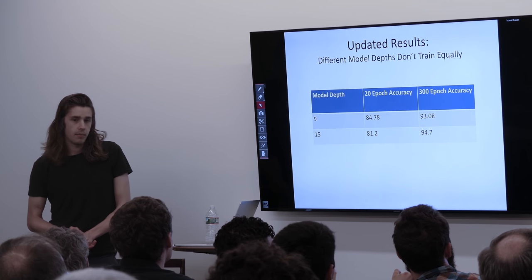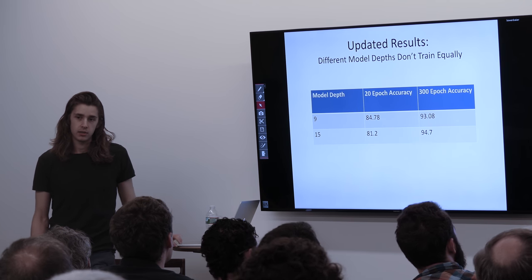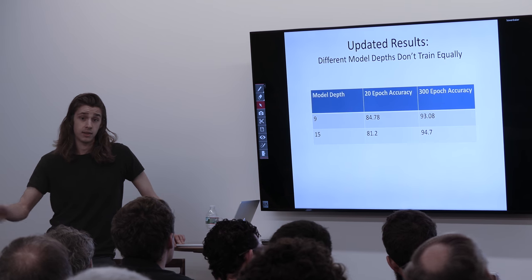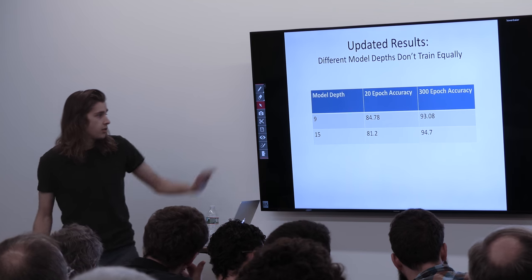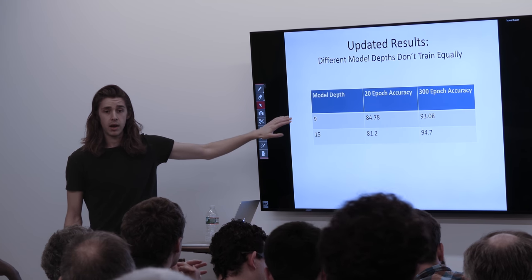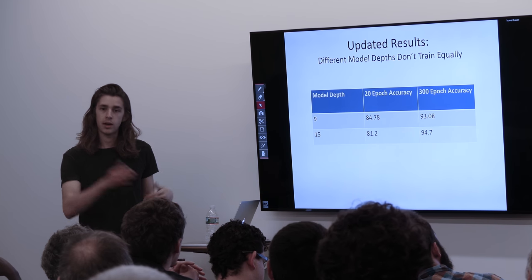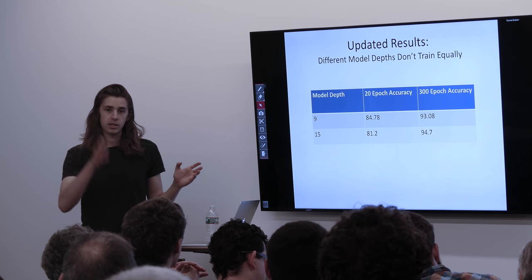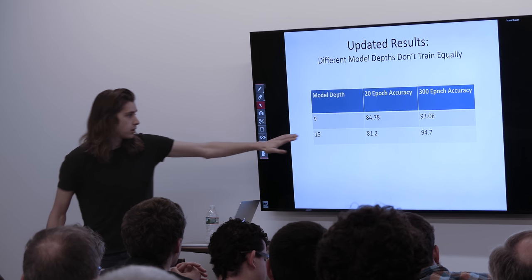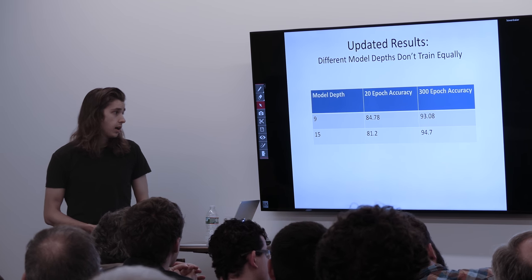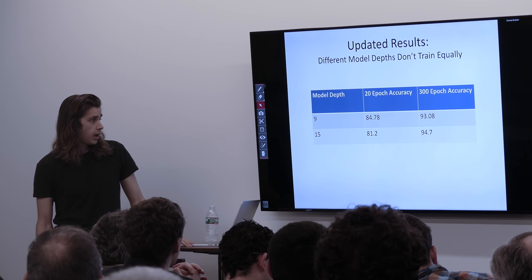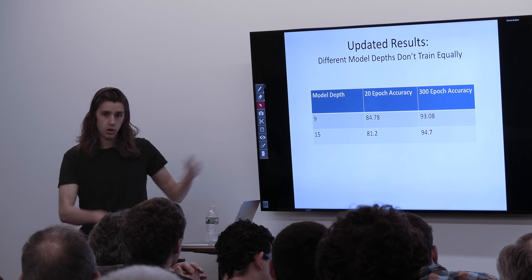Regarding model depth bias: different model depths don't train equally. We trained all models to 20 epochs on a fixed optimization schedule, then took the best model by 20-epoch validation accuracy and trained it to 300 epochs. The 9-layer model looked much better at 20 epochs — over 3% better — but when trained to 300 epochs it was actually worse than the 15-layer model. The 15-layer model was the best 15-layer model meta-QNN found during its exploration phase. We achieved 94.7% on CIFAR-10, beating everything in the fancy-model table except a thousand-layer ResNet, using just simple 2014-era convolutions and pooling.